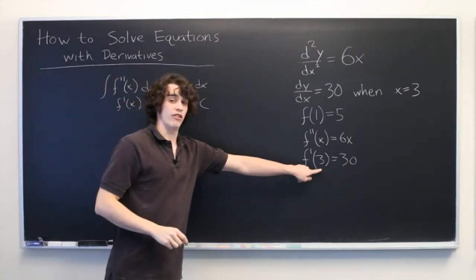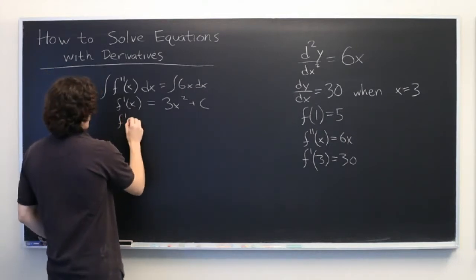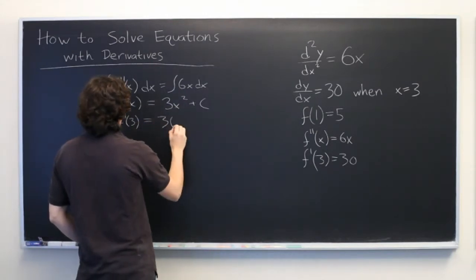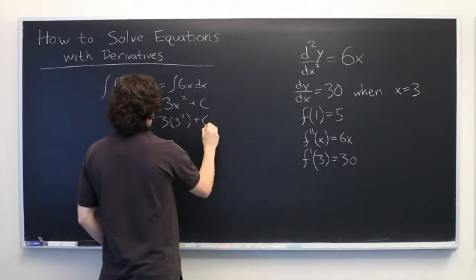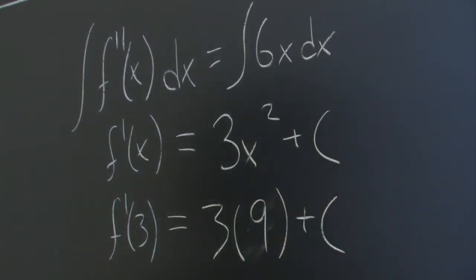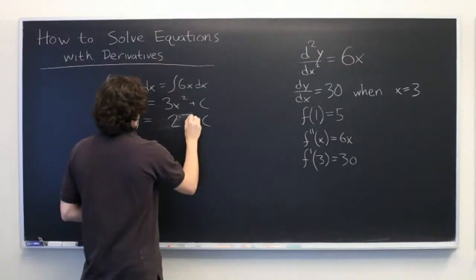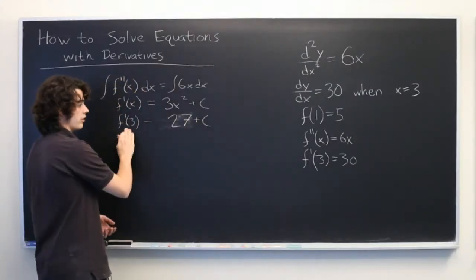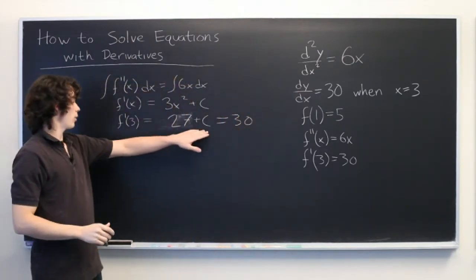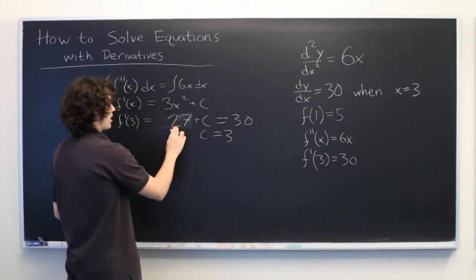But we can use this piece of information to determine the value of c. So, f prime of 3 is equal to 3 times 3 squared plus c. 3 squared is equal to 9. And 3 times 9 is 27. And we also know that this is equal to 30. Well, from here, we can quite quickly deduce that c is equal to 3. Since 27 plus 3 equals 30.